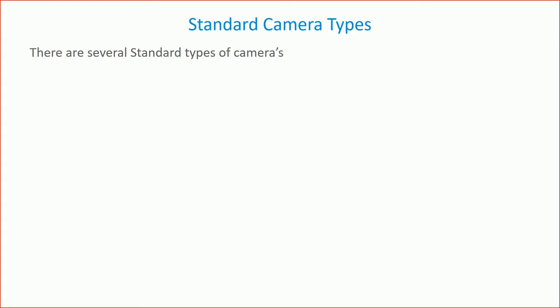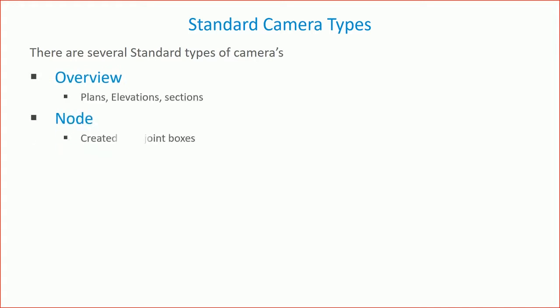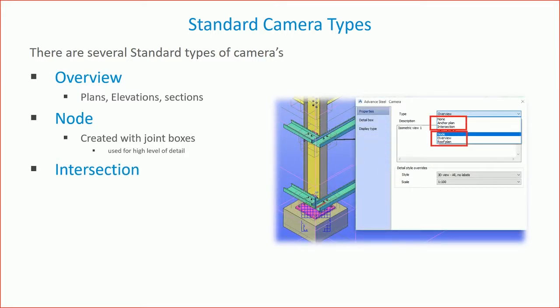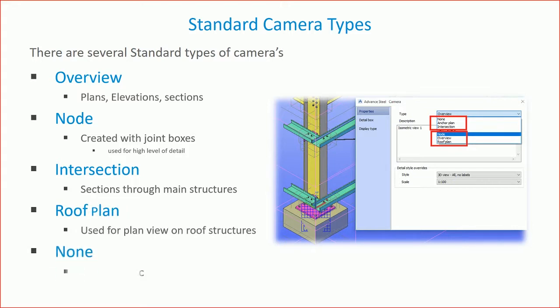The system comes with some camera types installed: standard overviews, node, intersection, none, and roof. All of these are placed inside the database and have various elements in place that enable you to create drawings from them. You can click on them, set the type, type in the description field, and set the style and scale. Typically they work with standard bulk processes available in the system.